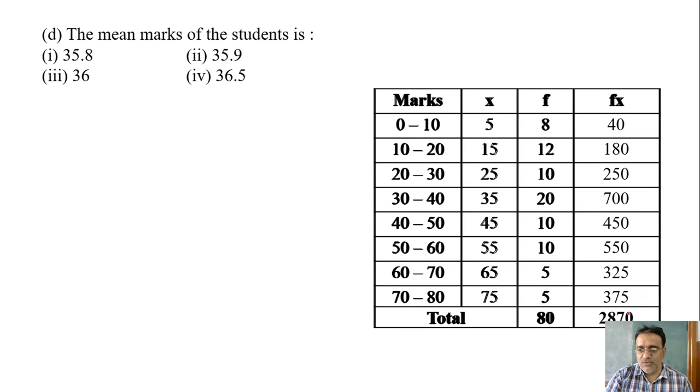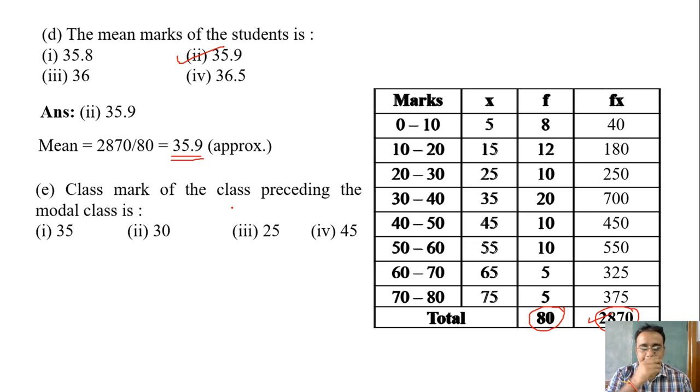And the total is 2870, and this total we already know is 80. The mean is given by the formula summation fx upon summation f, so 2870 upon 80, and we'll get approximately it is equals to 35.9. So which option is the correct one? Option 2.